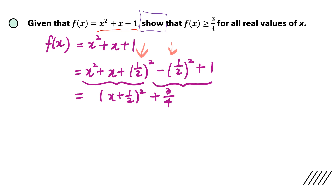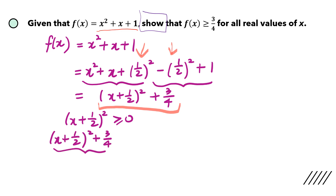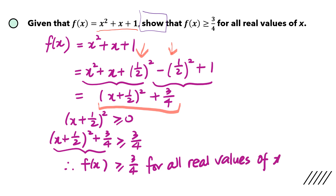We have achieved our objective — this is now in the completed square format. So now we can do some explanation. We know that when you square x plus a half, it's always greater than or equal to zero. Adding 3 quarters on both sides — and when you add something, you don't change the inequality sign; it remains the same. We replace this expression with f(x), so you can see that f(x) will always be greater than or equal to 3 quarters for all real values of x.